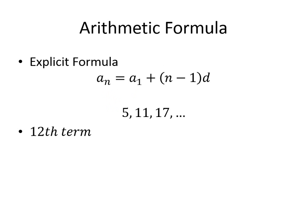Now the formulas for arithmetic. The explicit formula — to find any term in an arithmetic sequence — uses A1, which means the first term, the very first starting term of the sequence. N is whatever term you want to find, so if you want to find the 10th term, N would be 10. And D is the common difference.